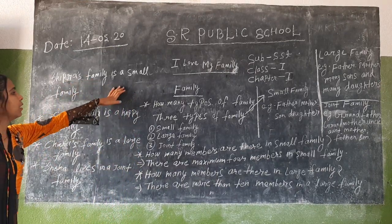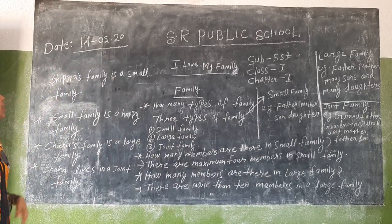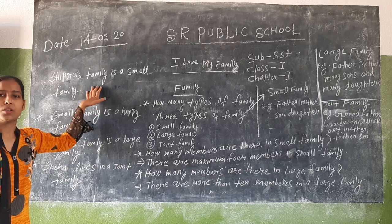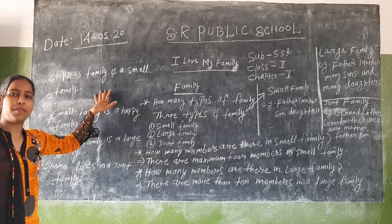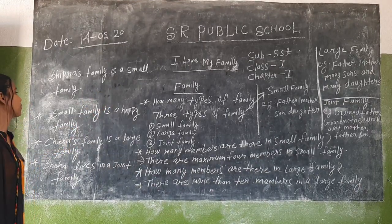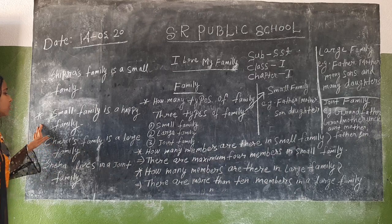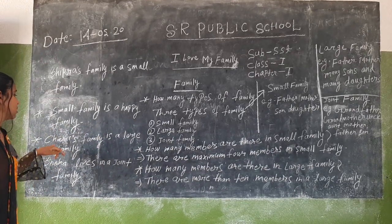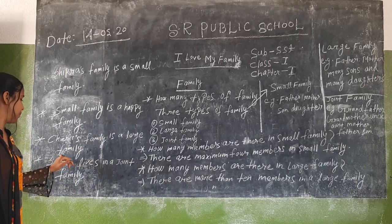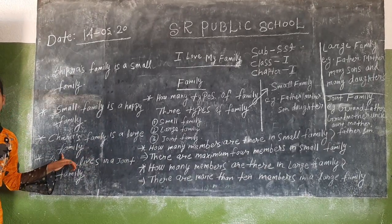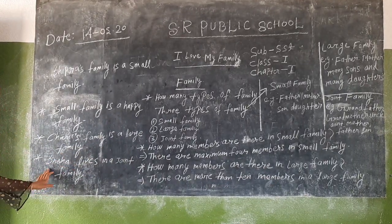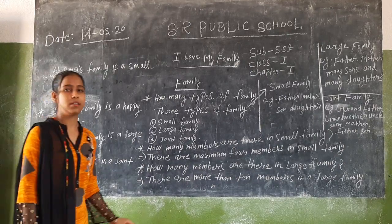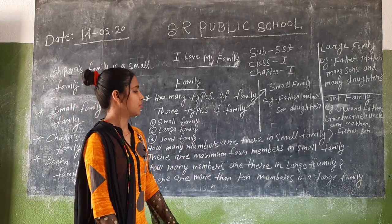According to your books, Sipra's family is a small family. You know, a small family is a very happy family. Charu's family is a large family and it is very noisy. And Sneha's family is a joint family.